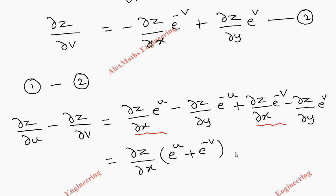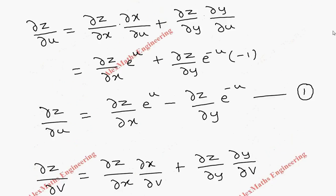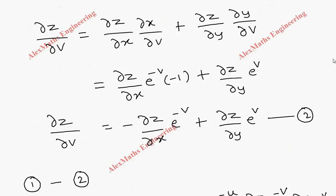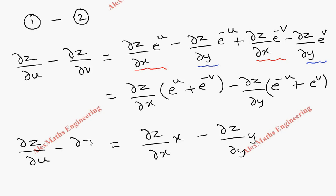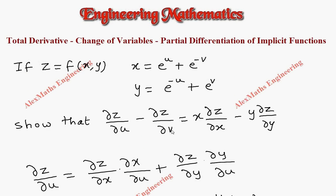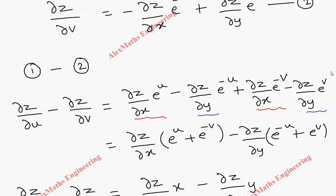Now let's take dou z by dou x common from the first and third terms, so the remaining will be e power u plus e power minus v. Then we take minus dou z by dou y common from the second and last terms, so this gives e power minus u plus e power v. But e power u plus e power minus v is nothing but x, and e power minus u plus e power v is y. So this can be written as dou z by dou x into x minus dou z by dou y into y.